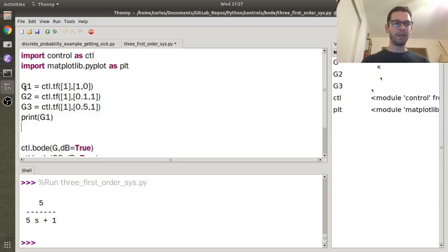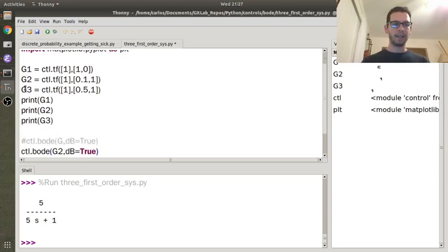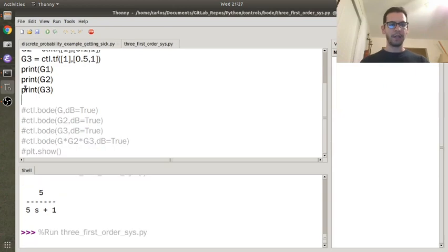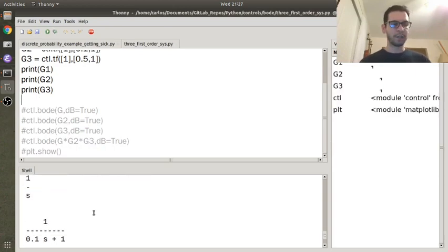And then I'm going to print G1, I'm going to print G2, I'm going to print G3, and then I'm going to go ahead and comment these out just so we don't get any plots popping up, and I'm going to show you these three transfer functions. And so there's G1, 1 over s, there's G2, 1 over 0.1 s plus 1, and then there's G3, 1 over 0.5 s plus 1.